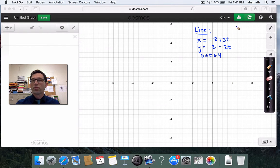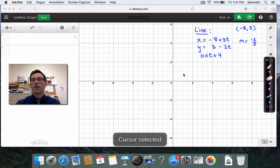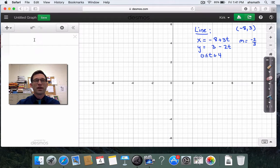Now, remember, for students that were in my class, this means that we've got some line that goes through the point negative 8 comma 3, and it has a slope of negative 2 thirds. And again, why that is, we developed in class. So let's take a look at how we graph this on Desmos.